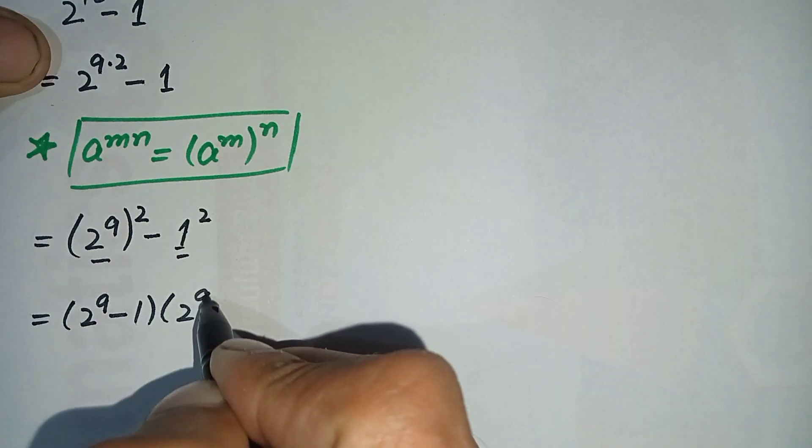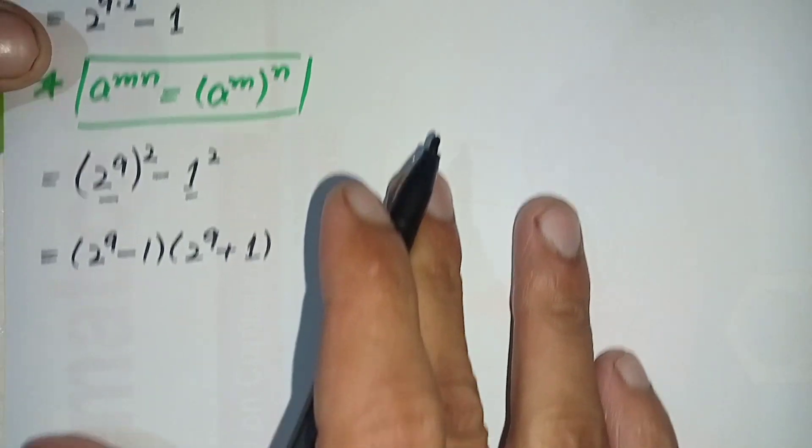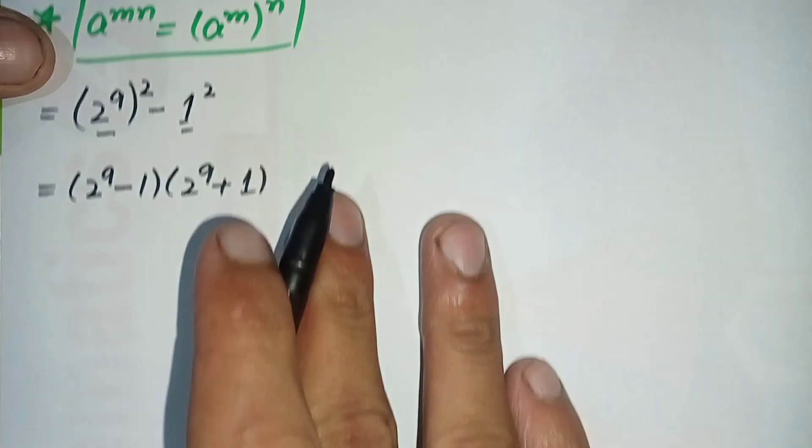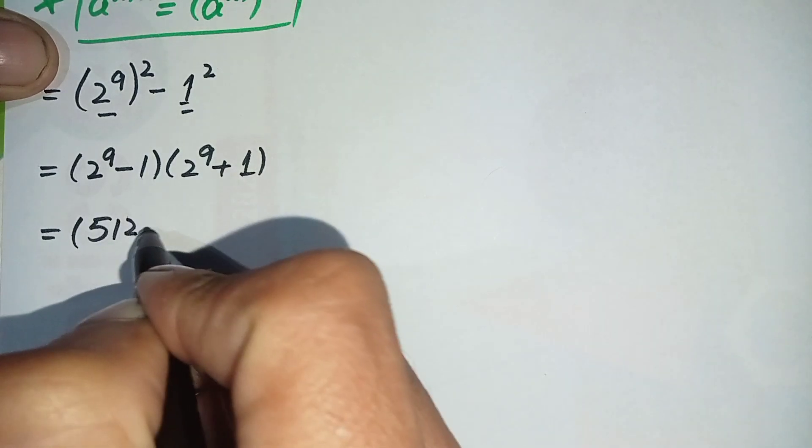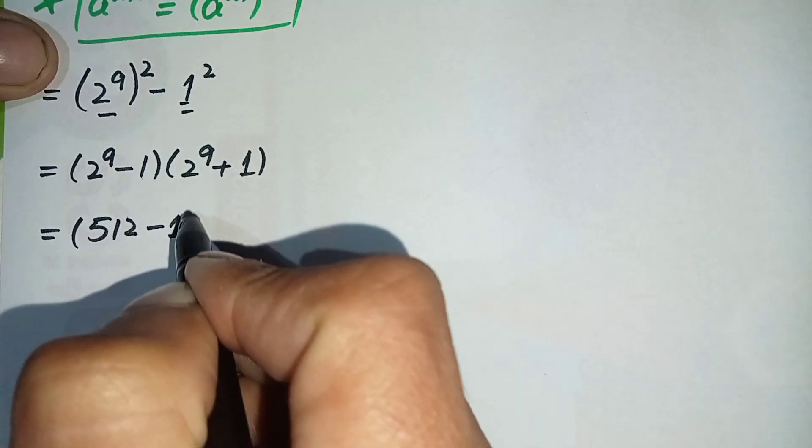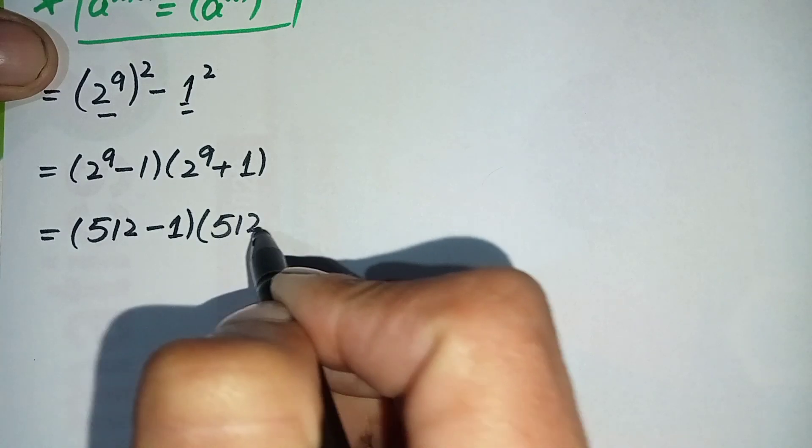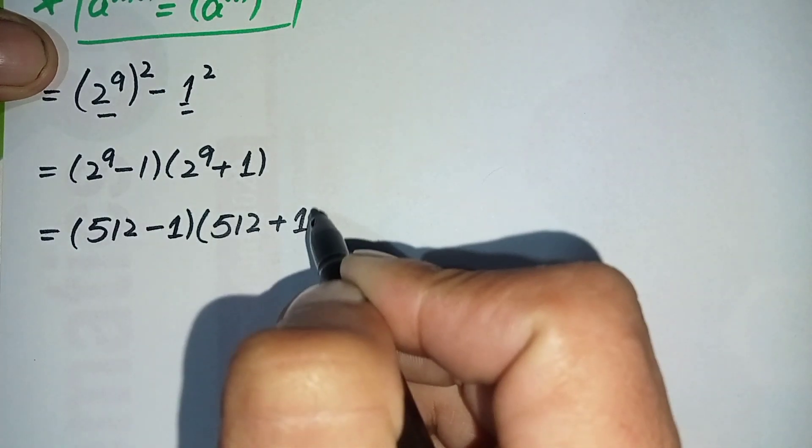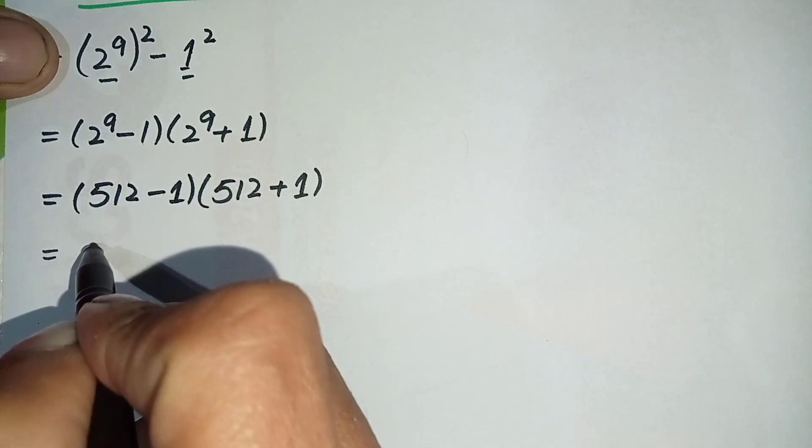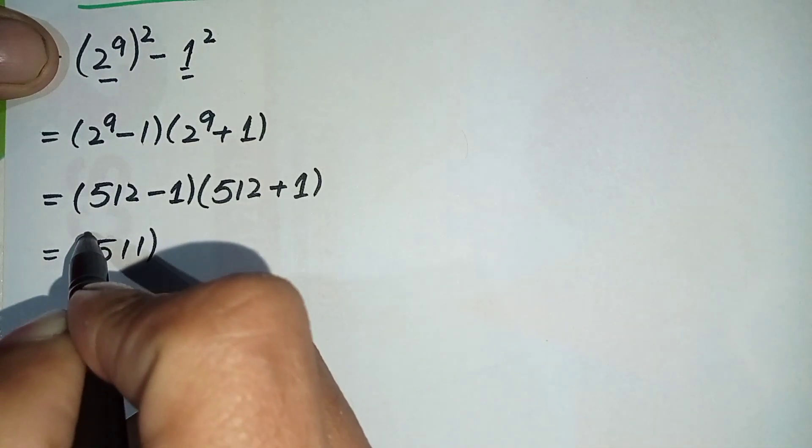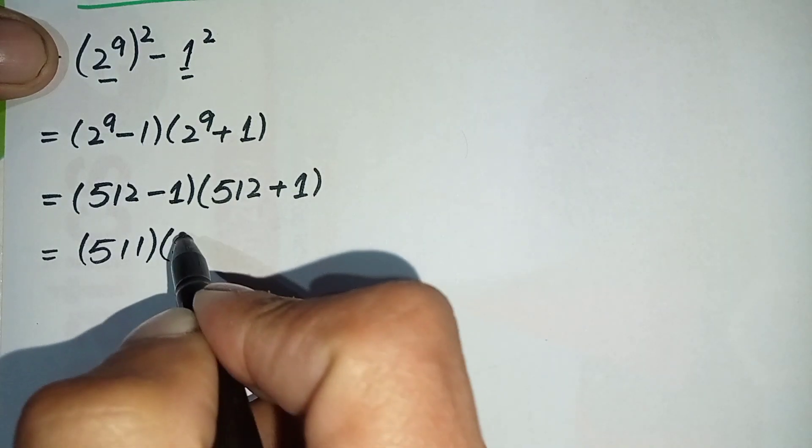Now since the value of 2 raised to power 9 is 512, we get 512 minus 1, which is 511, times 512 plus 1, which is 513.